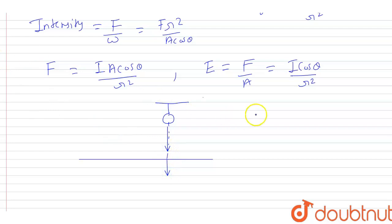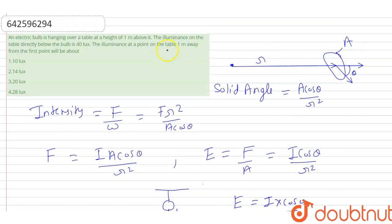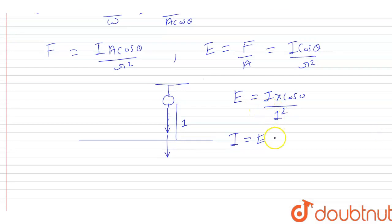And also, the area vector of this table will also be in the downward direction like this. So the angle between these two will be 0 degrees. So that means illuminance is equal to I into cos 0, and the distance between the bulb and the table is given as 1, so this r is equal to 1. That means it is square of 1, so I has come out equal to E. Now in the question, illuminance is given as 40 lux, so that means intensity is also equal to 40.